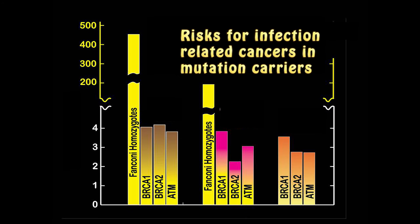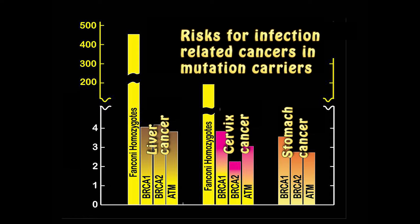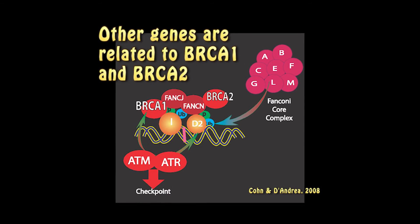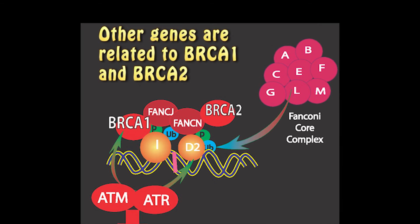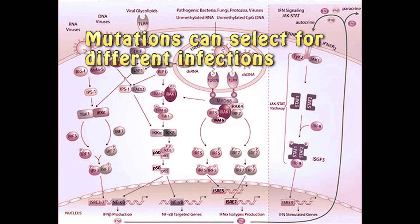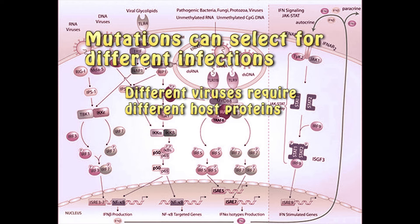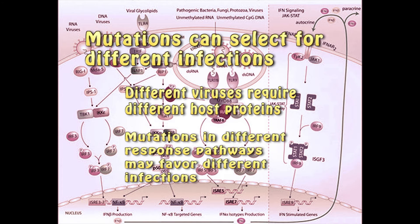Carriers of faulty BRCA1 or BRCA2 genes are more likely to accumulate mutations in their immune system, so antiviral defenses can weaken more rapidly. This is also true for defects in other genes related to BRCA1 and BRCA2. Sometimes the mutations can favor one infection over another, because some viruses require specific proteins from the host. If the genes for these proteins are mutated, then some infections are less likely. There are also different mechanisms to respond to different infections, so mutations in some of these responses can change which infection becomes more likely.